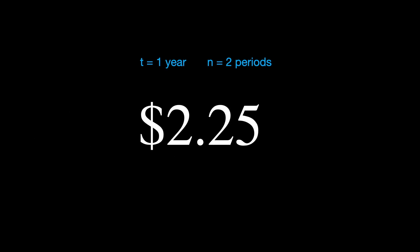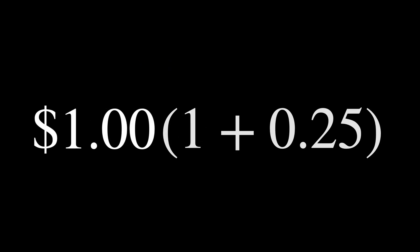This is called compound interest. If you instead reinvest every quarter of a year, you would have a factor of $1.25 raised to the fourth power since there are four periods, leaving you with about $2.44.